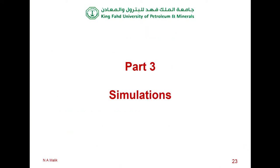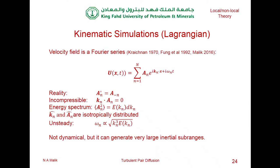We now move on to simulations. DNS is out of the question — many decades away. So we look at a Lagrangian model: kinematic simulations (KS), which is basically a Fourier series with amplitude proportional to the energy spectrum. One limitation is that it's not dynamical, but it has the advantage of generating a very large inertial subrange, which is suitable for our purposes.